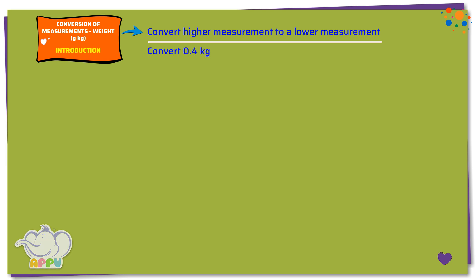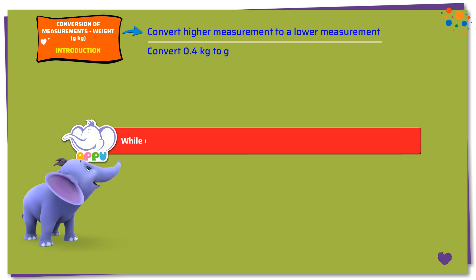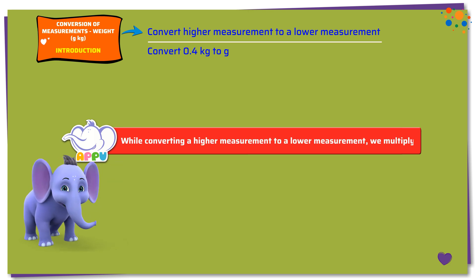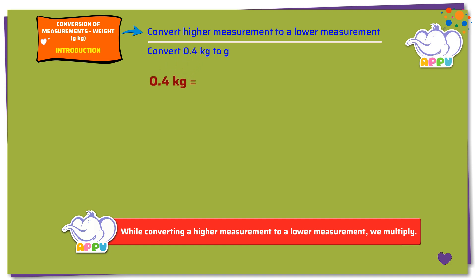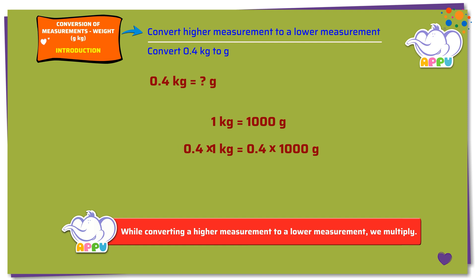Let's convert 0.4 kg to grams. While converting a higher measurement to a lower measurement, we multiply. Here we need to find how much is 0.4 kg in grams. We know that 1 kg equals 1000 g. Multiplying both sides by 0.4, we get 0.4 × 1 kg = 0.4 kg, and 0.4 × 1000 g = 400 g. So 0.4 kg equals 400 g.